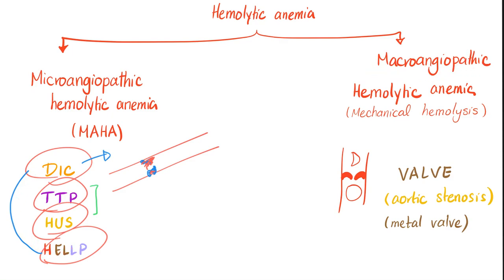On the other hand, macroangiopathic hemolytic anemia involves large vessels, such as the aorta. If you have aortic stenosis, or if you have replaced your original valve with a metallic valve, you can get calcification and a stiff valve, so the red blood cells will get absolutely sheared while trying to pass through. Whether micro- or macroangiopathic, the end result is schistocytes, also known as helmet cells or fragmented red blood cells.